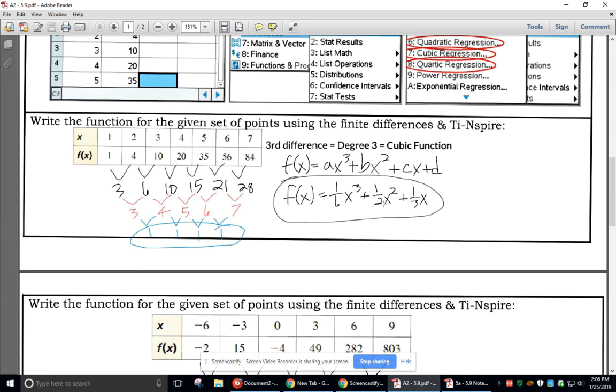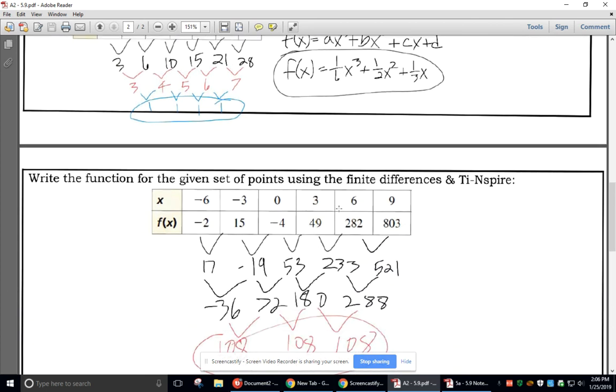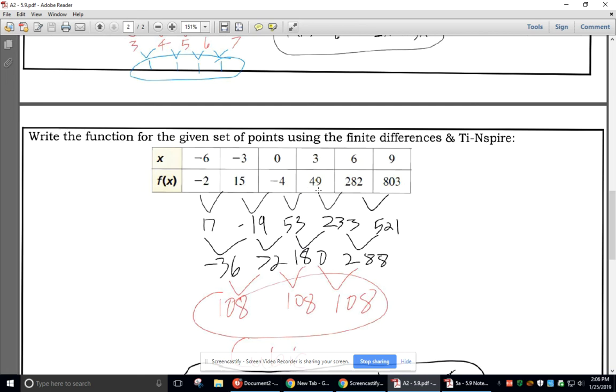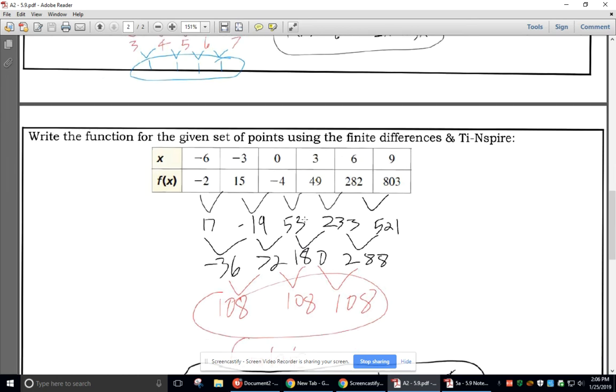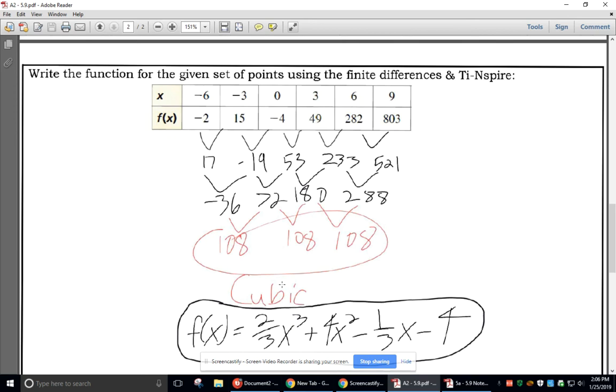So in this second example, if you want to pause the video right here and do it yourself, I encourage you to do that. But I'm going to keep going. So in this second example, the third differences ended up being the same again. They were all 108. This one was all 1. It doesn't really have anything to do with the function. It just told me that it was a cubic function.